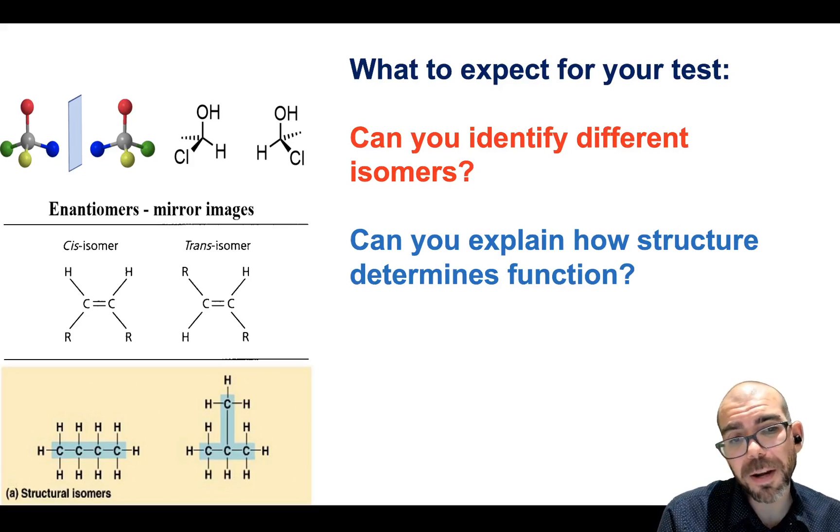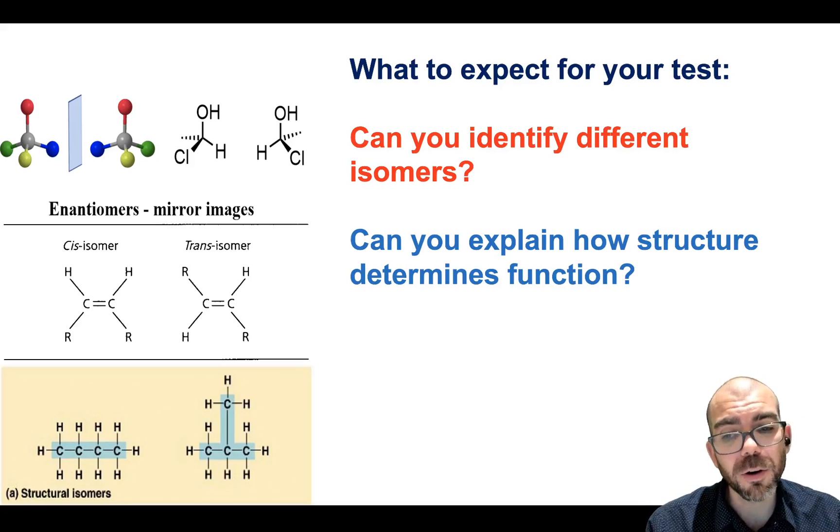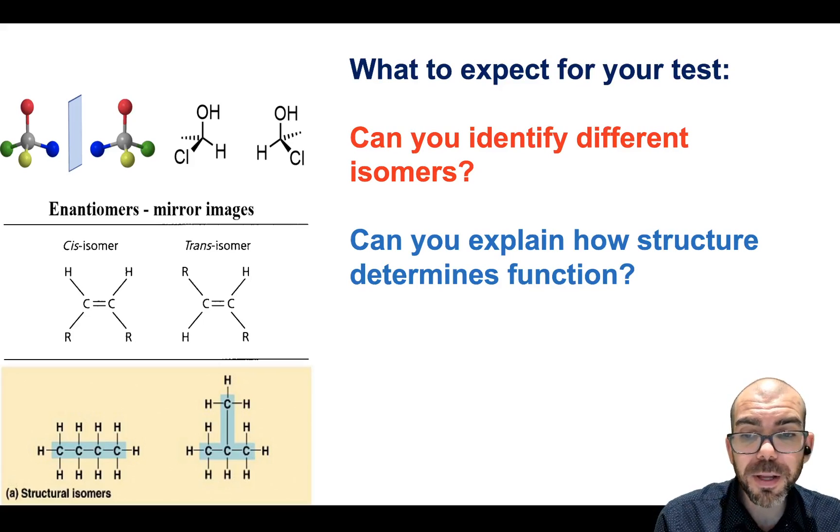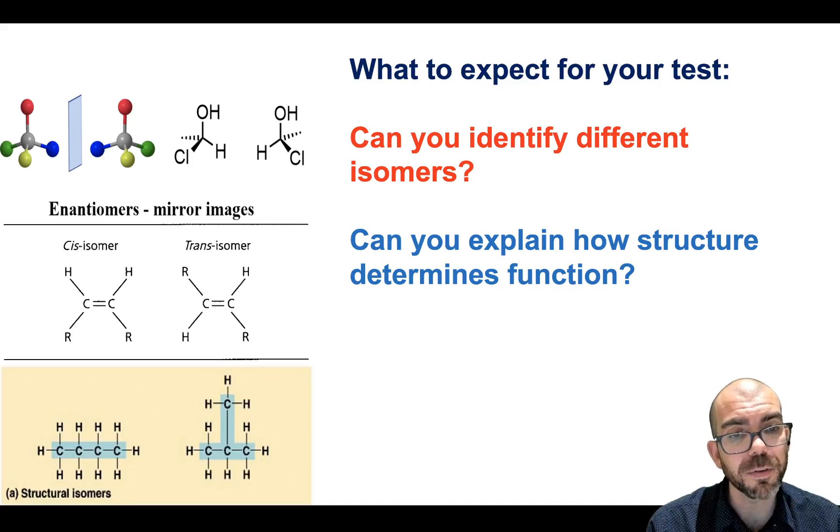So what could you expect for your test with isomers? Would you be able to identify between these three categories? If I were to give you an isomer, could you tell me if it's structural, if it's geometric, if it's cis or trans, or if it's an enantiomer? And could you explain how each of these structures causes a difference in the function?